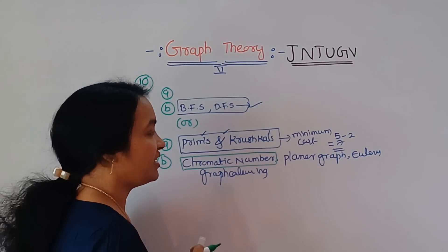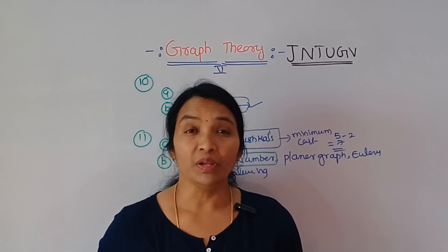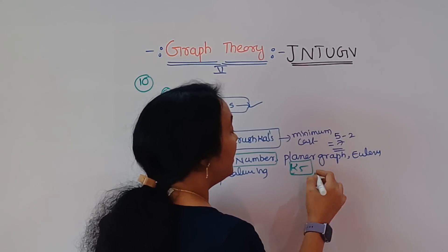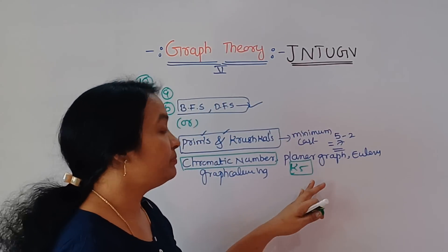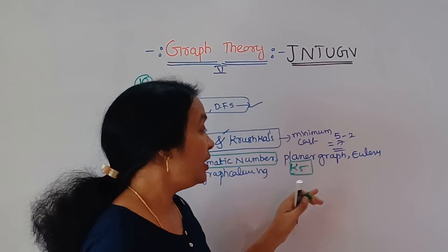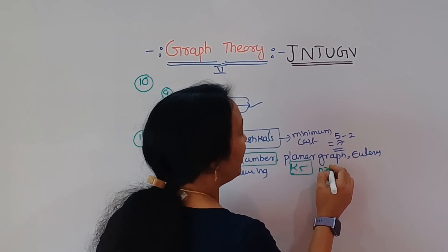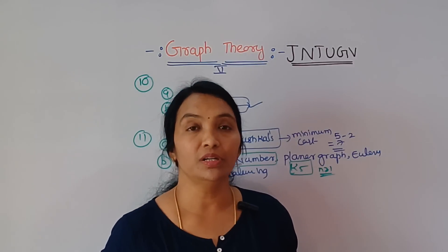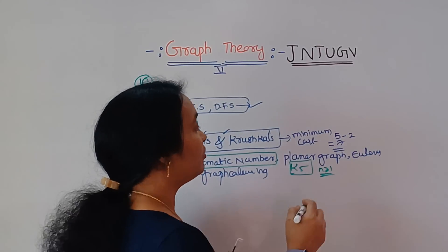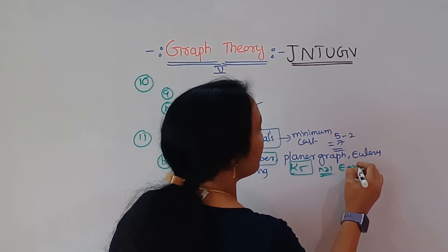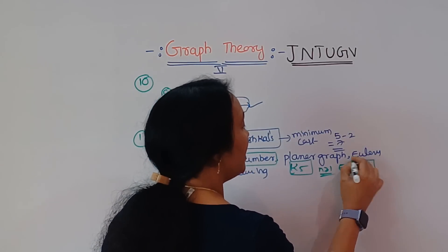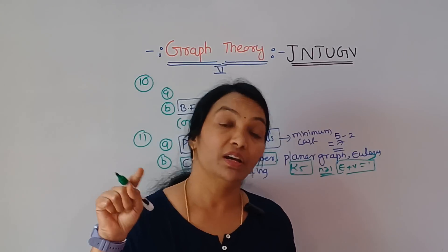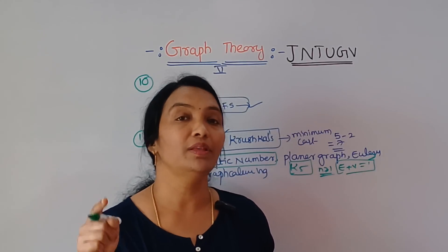After that, planar graph. Is K5 graph a planar? No. Every planar graph is a theorem. N greater than or equal to 1. What is Euler's? E plus V plus vertices equals Euler's theorem. If you have a problem in Euler's, I will show you the problem.